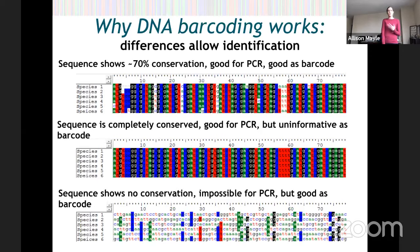Hopefully that helps you understand how these genes were chosen. This is why scientists came up with RBCL, CO1, and the other genes listed on that previous slide.